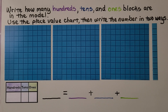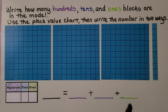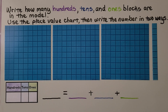Here we need to write how many hundreds, tens, and ones blocks are in the model. We can use a place value chart, then write the number in two ways. We see there are three hundreds blocks, so we're going to have a three in the hundreds place.